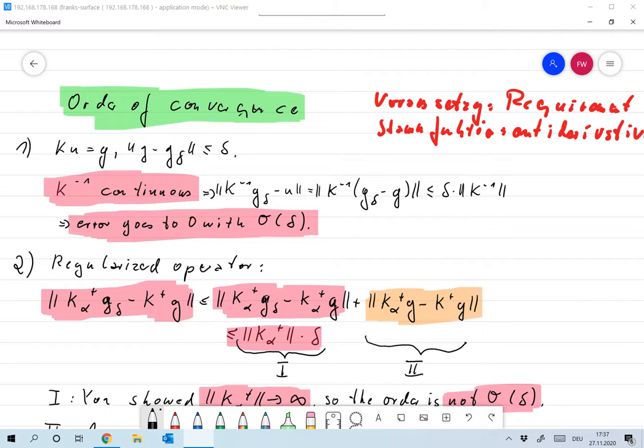I looked up the words I didn't remember in the vocabulary. Voraussetzung is requirement, Stammfunktion is antiderivative. I'll probably forget it anyway again, but now you know. Okay, let's talk a little bit about order of convergence and error estimates.